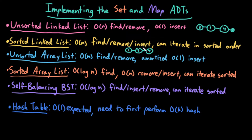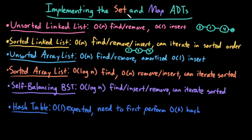Finding is big O of N, because even though the list is sorted, linked lists do not have random access, so I can't perform binary search — I still have to iterate over all N elements to find an element. Because finding is big O of N, removing is also big O of N, and inserting is also big O of N.